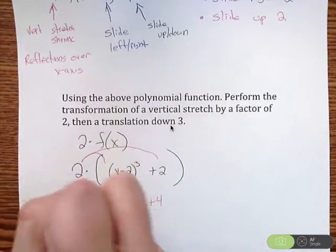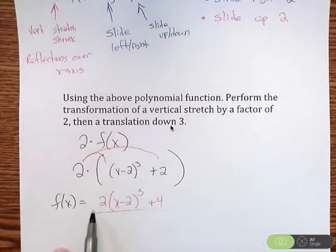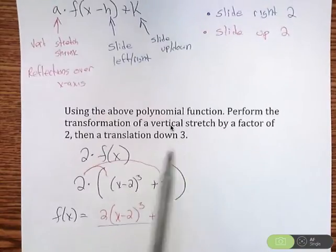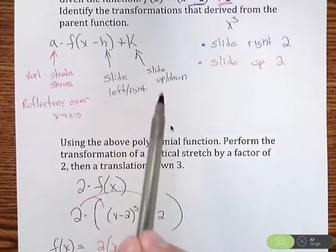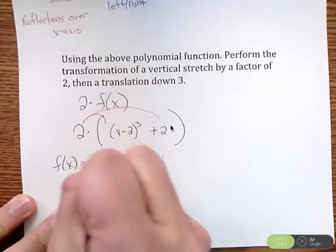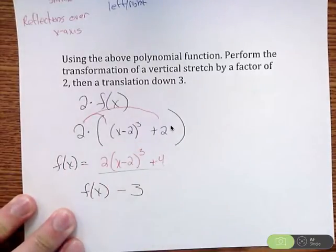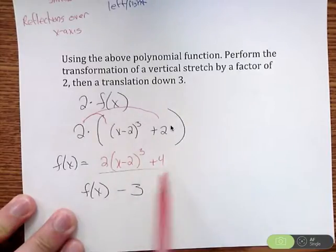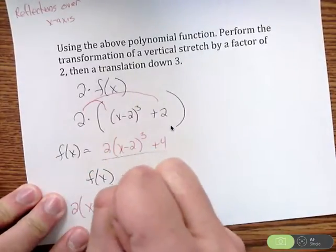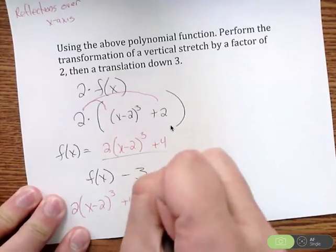So this now becomes my new f of x function. So f of x is now 2 times x minus 2 cubed plus 4. The second thing we need to do is we need to do a translation down 3. So if I want to translate, that's another name for slide. So slide down 3, that deals with k. So since I want to go down 3 or replace k, I'm going to have f of x minus 3. The only thing I'll have to do is I'm going to take f of x. I need to substitute in here. So f of x is all this. I'm going to take all of that substitute in for the f of x here. So I'm going to have 2 times x minus 2 cubed plus 4. Then I have that minus 3 on the back end.